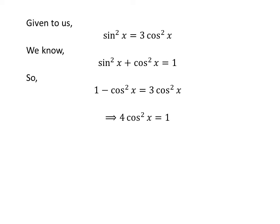Moving the cos²x term from the left-hand side to the right-hand side and reversing the sides gives us 4cos²x = 1. Dividing the whole equation by 4 gives us cos²x = 1/4.